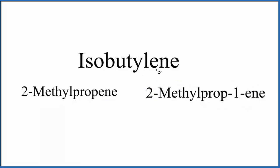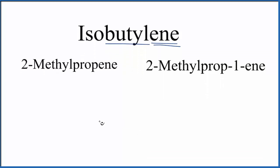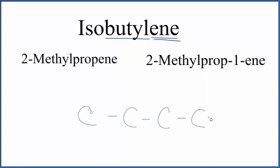The 'ene' here tells us we're going to have a double bond somewhere. And 'butyl' means there's going to be four carbons, so let's just put them in a chain. We'd have hydrogens around each one of these — so this would be butane.